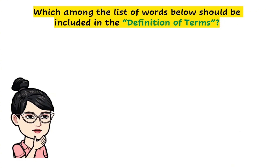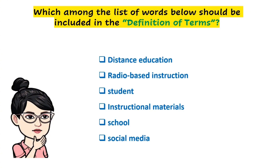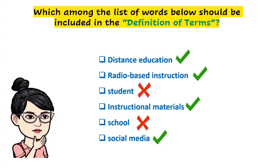Now let's have some exercises. Can you identify which among the words listed below should and should not be included in the definition of terms? The words are: distance education, radio-based instruction, student, instructional materials, school, and social media. There is no need to define the words 'student' and 'school' because those are simple terms — they are not complicated and most of us already know their meaning.